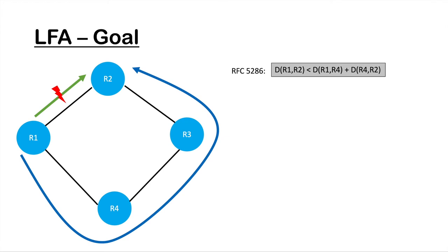To understand how LFA does this, we need to understand what LFA is trying to do. LFA is trying to find a loop-free alternate path. LFA checks each and every path from ISIS against some inequalities — if those inequalities are satisfied, LFA qualifies those routes to be used as a repair path. For more details you can search for RFC 5286, which has all the inequalities defined.